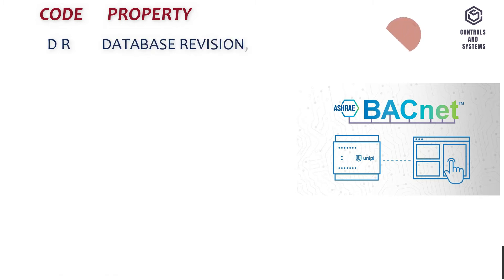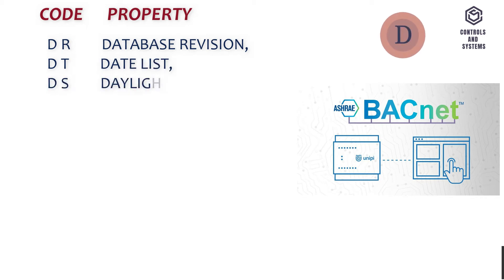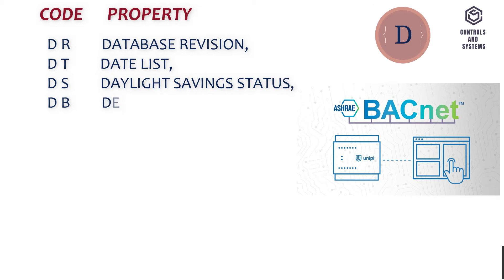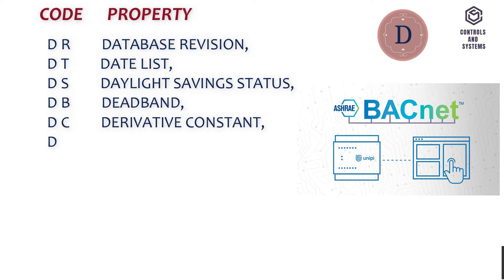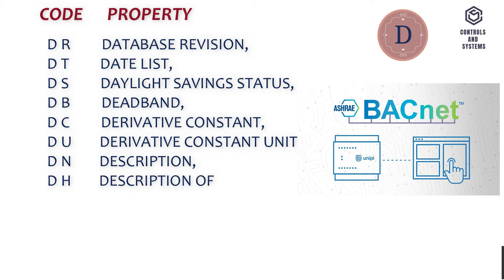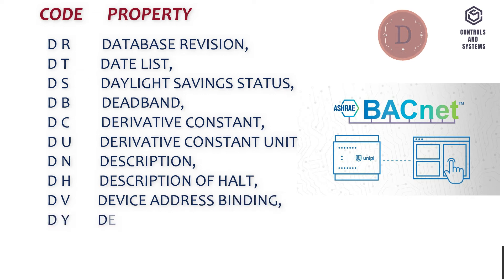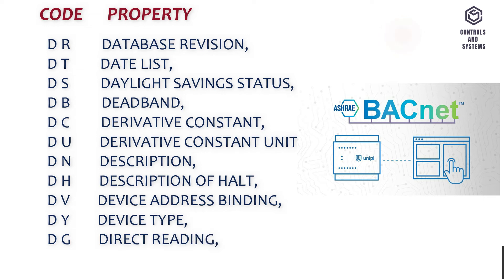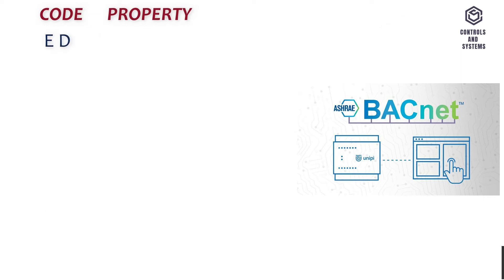C-D-T - Database Revision, C-D-S - Date List, C-D-B - Daylight Savings Status, C-D-C - Dead Band, C-D-U - Derivative Constant, C-D-N - Derivative Constant Units, C-D-H - Description, C-D-V - Description Of Halt, C-D-Y - Device Address Binding, C-D-G - Device Type, C-D-E - Direct Reading.